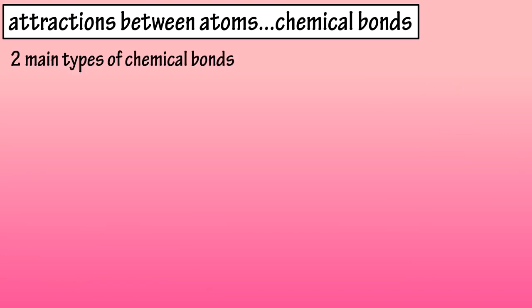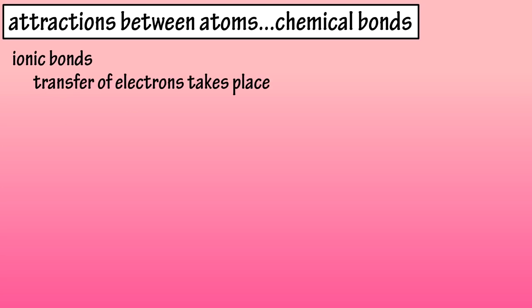There are two main types of chemical bonds, ionic bonds and covalent bonds. Ionic bonds are bonds where the transfer of electrons takes place. Let's see how this type of bond works.